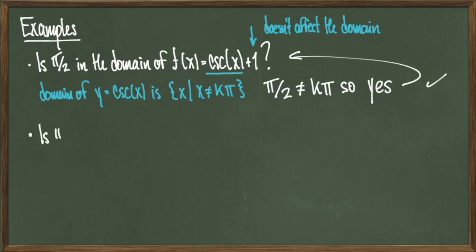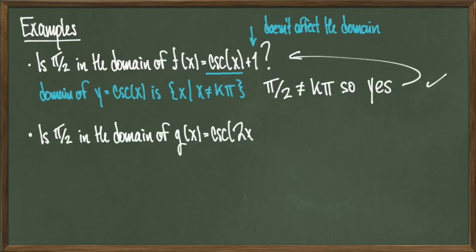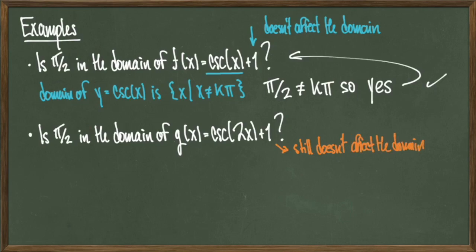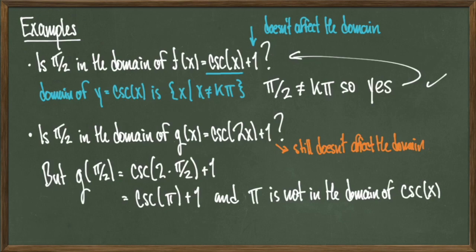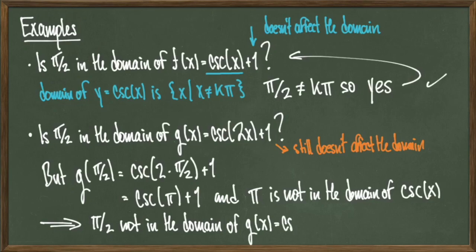Now let's ask if pi over 2 is in the domain of g(x) = cosecant(2x) + 1. Again the plus 1 on the outside does not affect the domain. Evaluating g at pi over 2: g(pi/2) = cosecant(2 · pi/2) + 1 = cosecant(pi) + 1. However, pi itself is not in the domain of cosecant. Therefore pi over 2 cannot be in the domain of g(x).